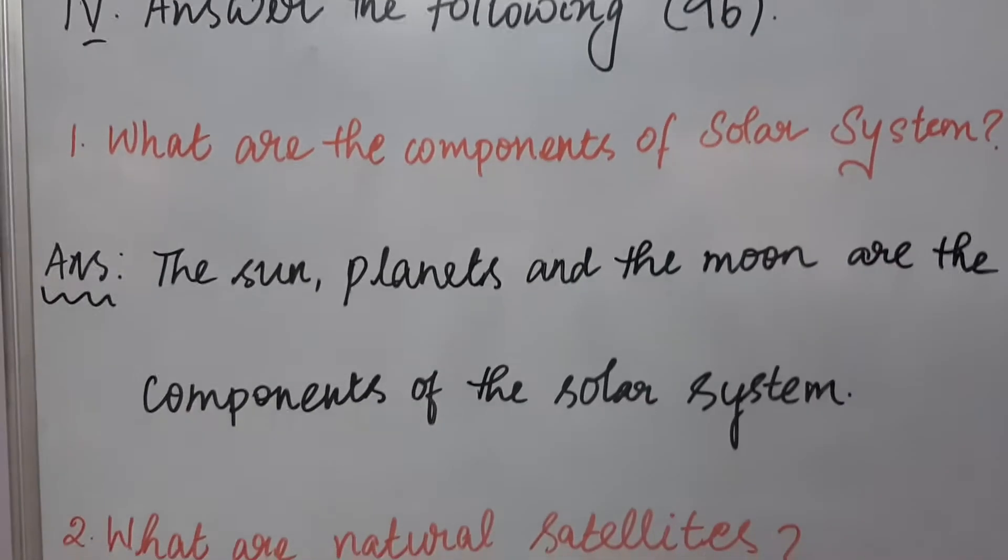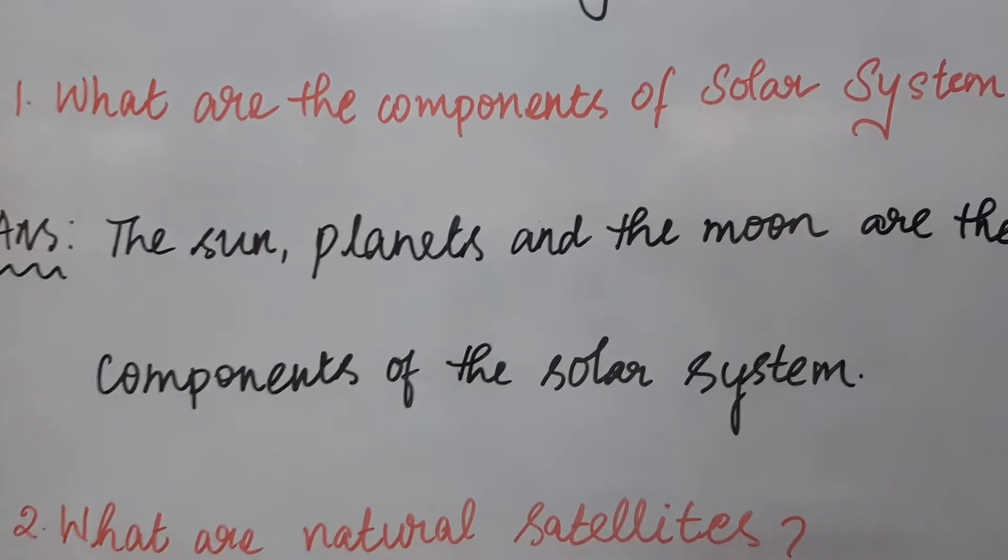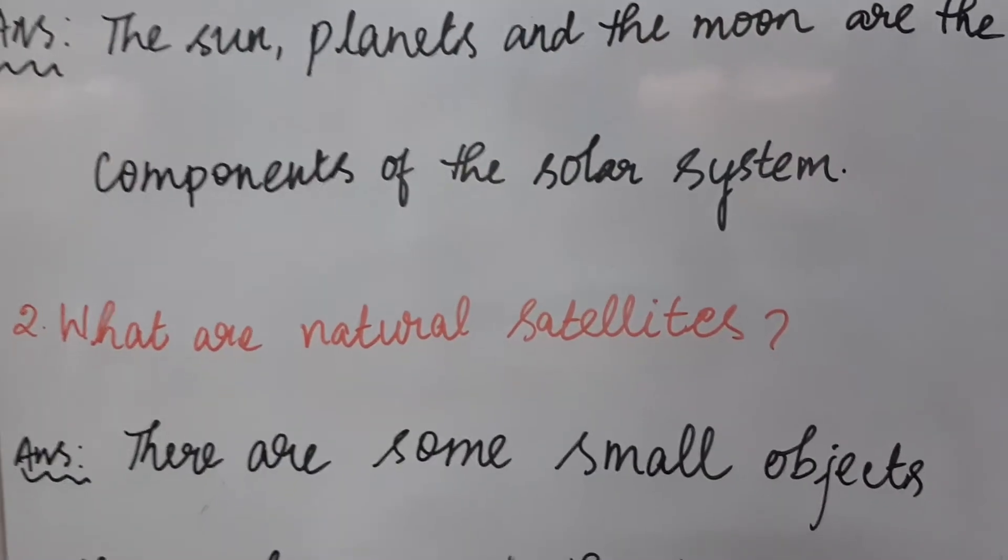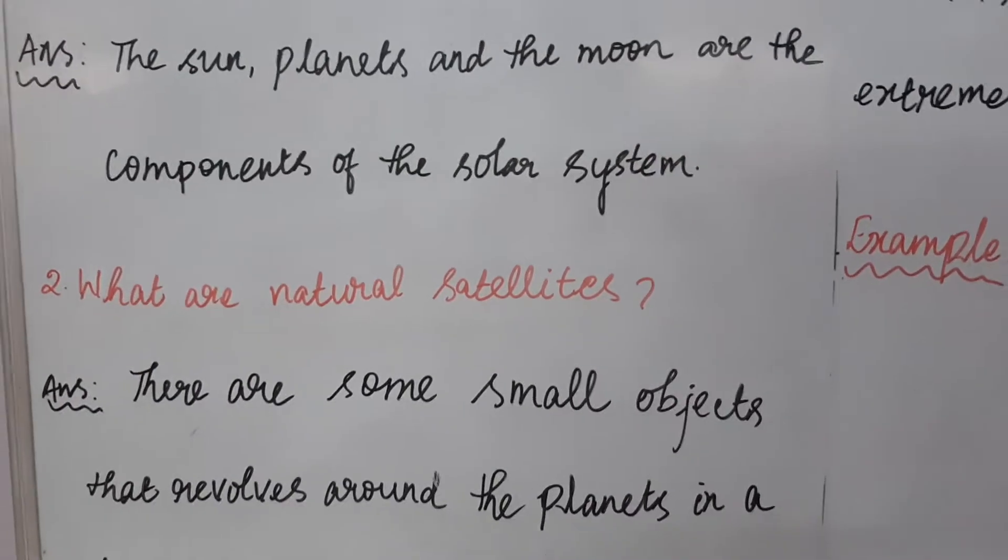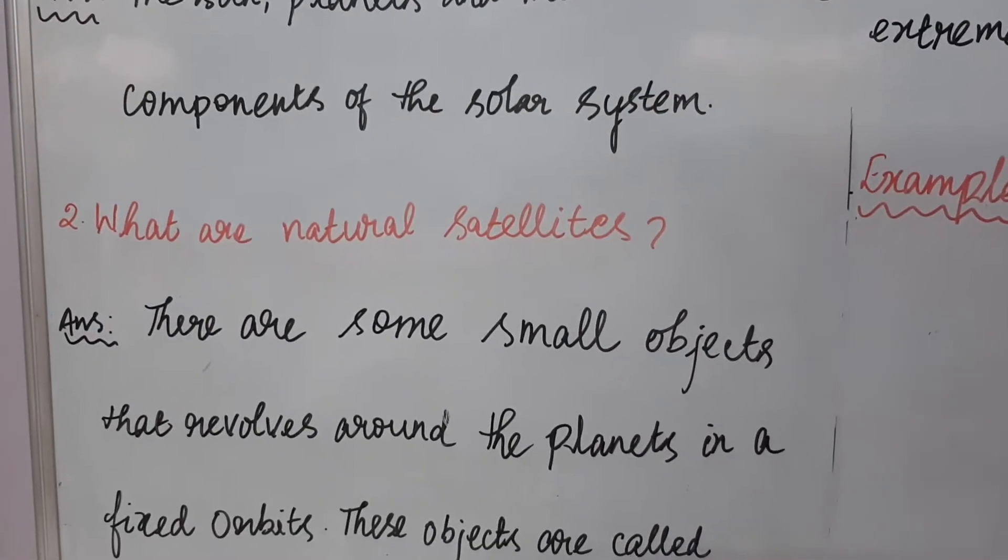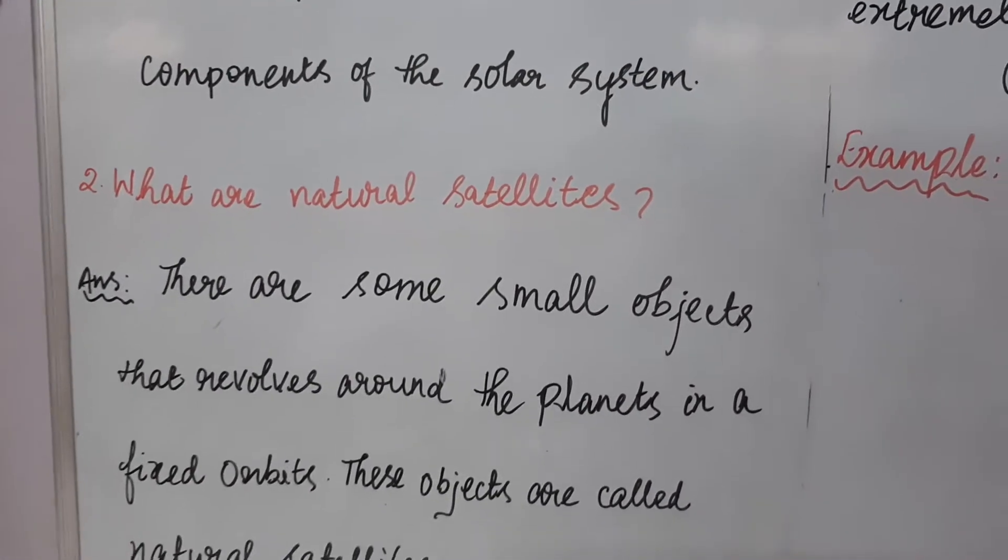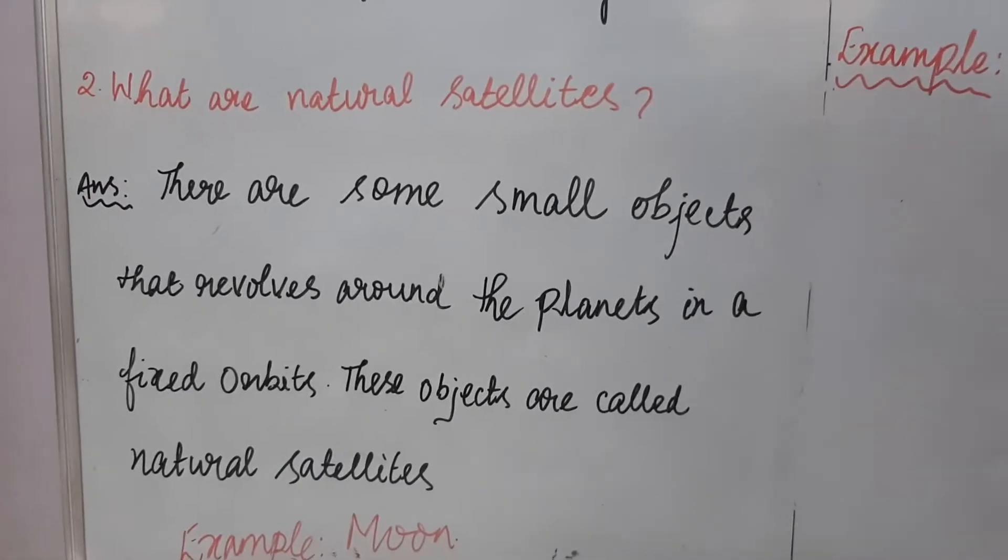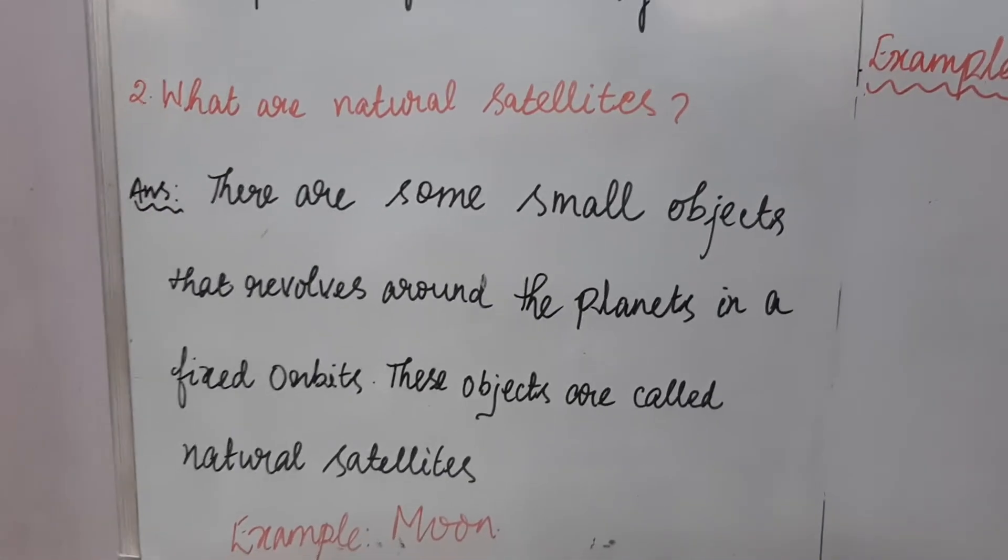What is the second question? What are natural satellites? There are some small objects that revolve around the planets in a fixed orbit. These objects are called natural satellites. Best example, of course: moon. Moon is Earth's natural satellite.